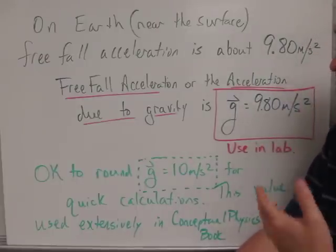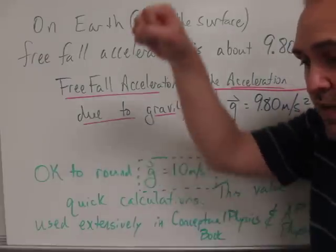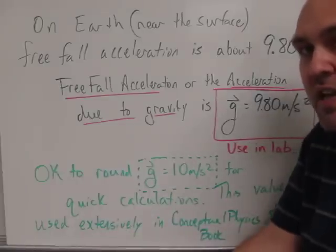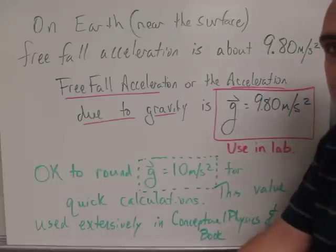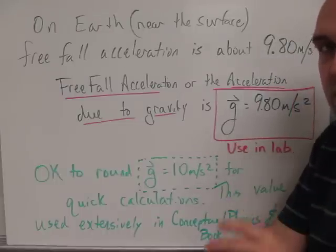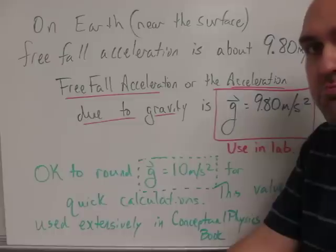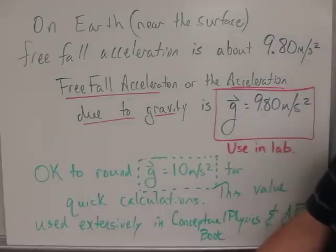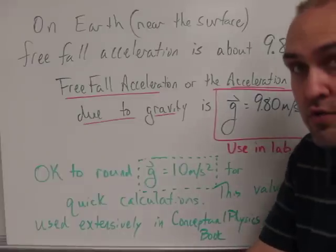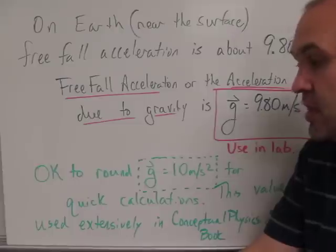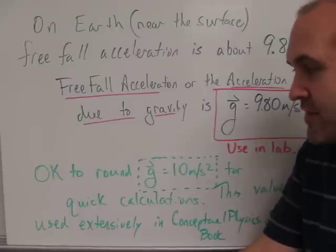That means if you drop something, then every second that goes by, its speed will change by 9.8 meters per second. That's what that means to have an acceleration of 9.8 meters per second per second, or 9.8 meters per second squared. So that's a number you definitely want to include on your equation card, on your toolbox, is that value for g on the Earth near the surface.